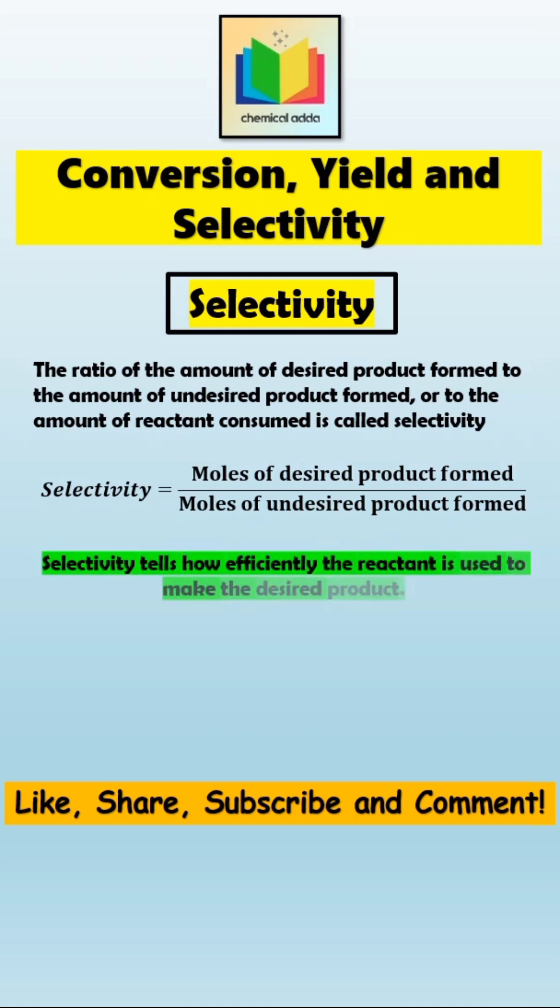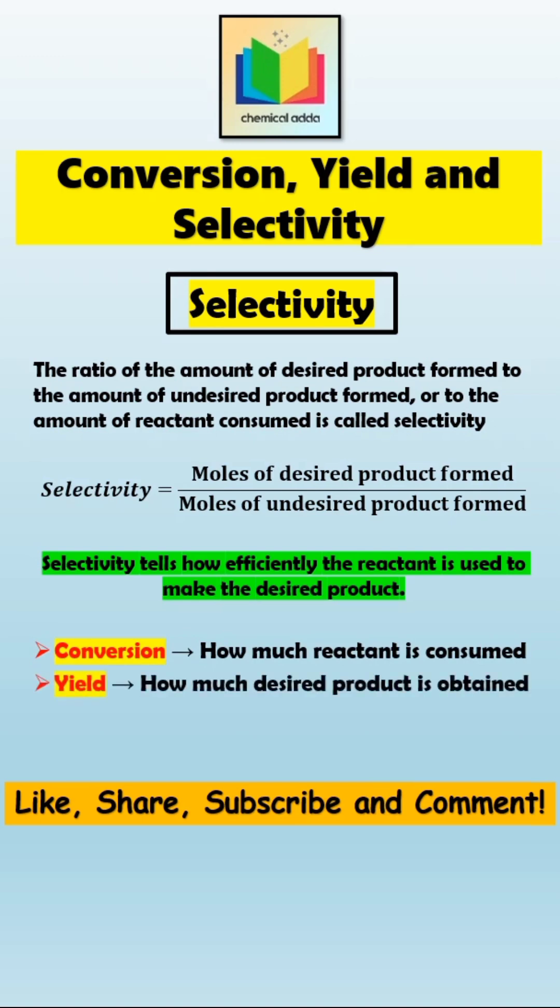So selectivity tells how efficiently the reactant is used to make the desired product. In short, conversion tells how much reactant is consumed, yield tells how much desired product you got, and selectivity tells how efficiently you made it.